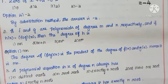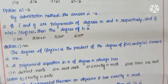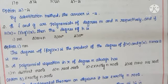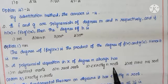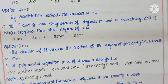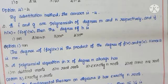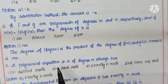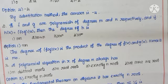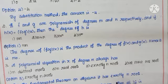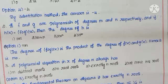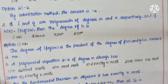Question number 3: a polynomial equation in x of degree n — does it always have n distinct roots, n real roots, exactly n roots, or at most one root? By the fundamental theorem of algebra, we can declare it has exactly n roots. So option 3 is the right choice.